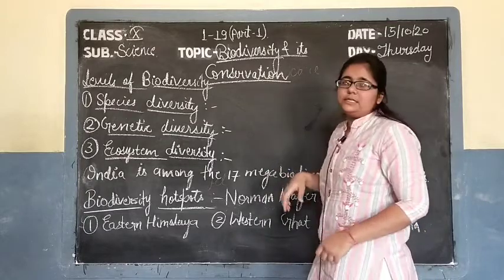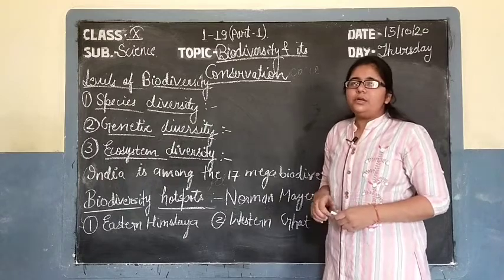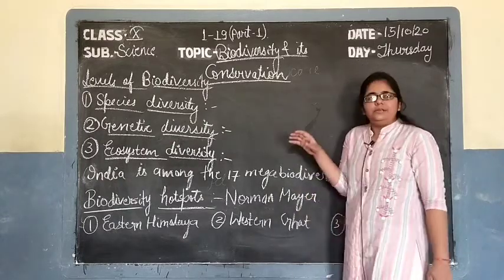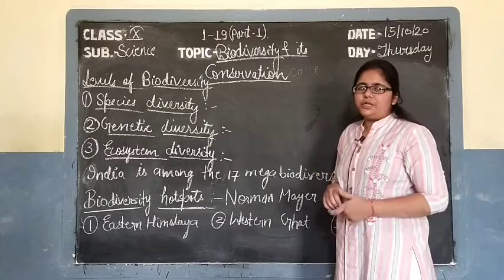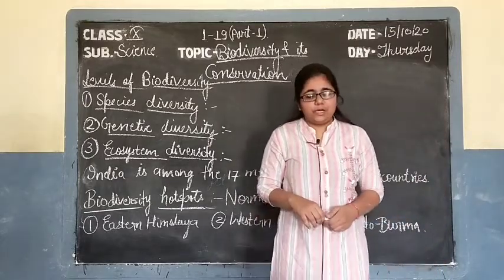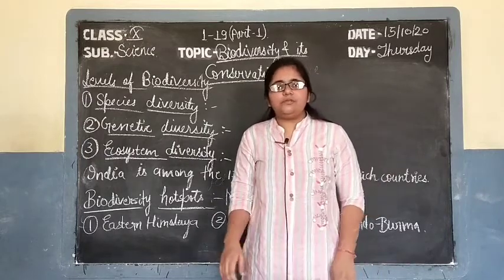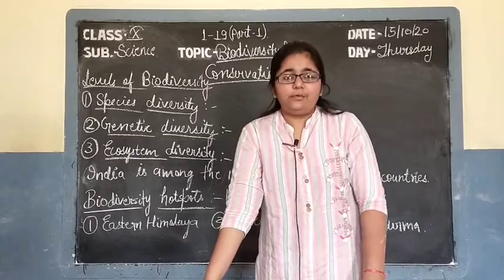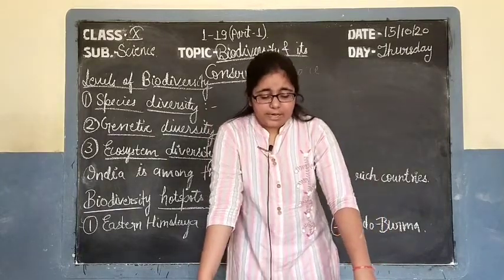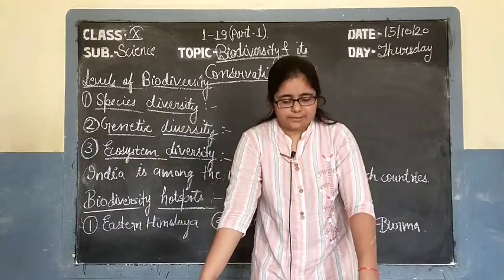First of all we will discuss what biodiversity is. The word 'bio' denotes the term living, and 'diversity' is the variation. So we will discuss about the variation of living forms — the entire flora and fauna. Flora is the word used for plants and trees, and fauna is the term used for various animals. So the entire flora and fauna and their variation is biodiversity.